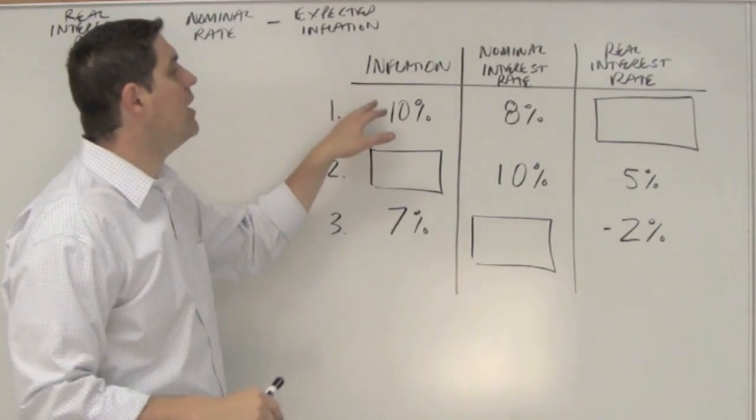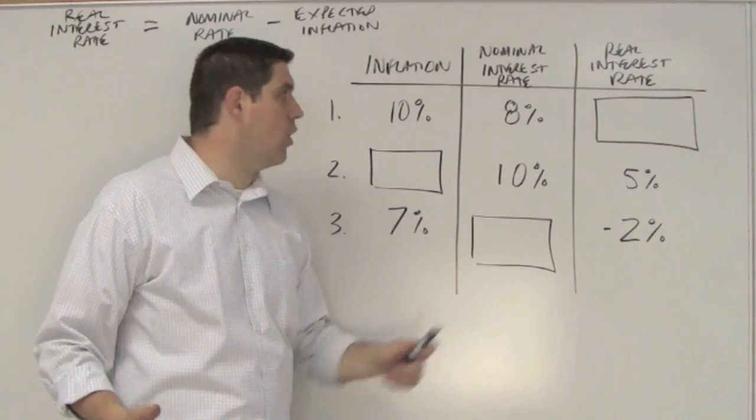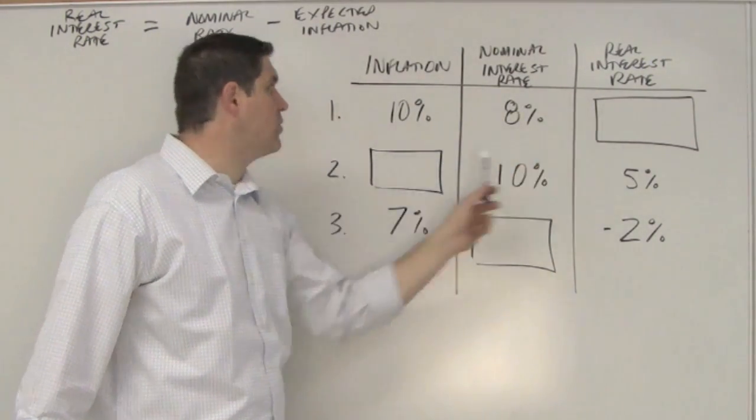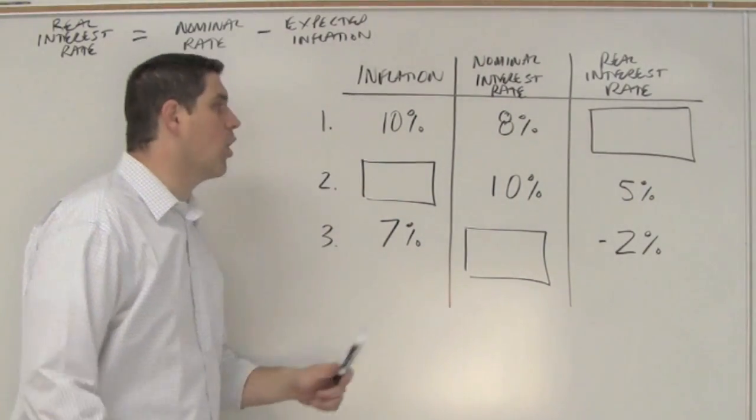What I have for you is the inflation rate, the nominal interest rate, and the real interest rate. In each one, you're solving for a different thing. So this one, I want to know the real interest rate. This one, I want to know the inflation rate. This one, the nominal interest rate. Fill this thing out. We'll go over it. Good luck.